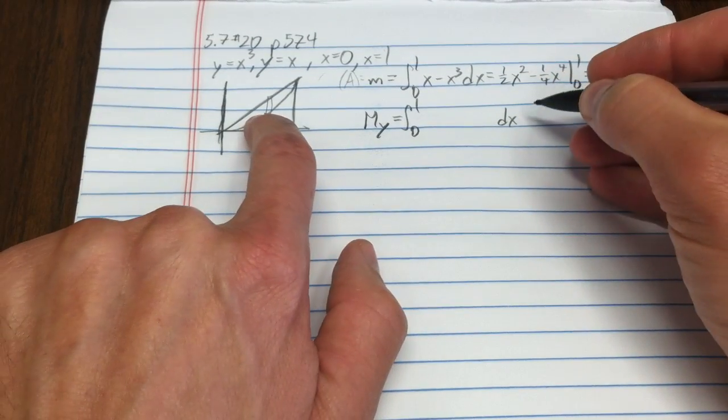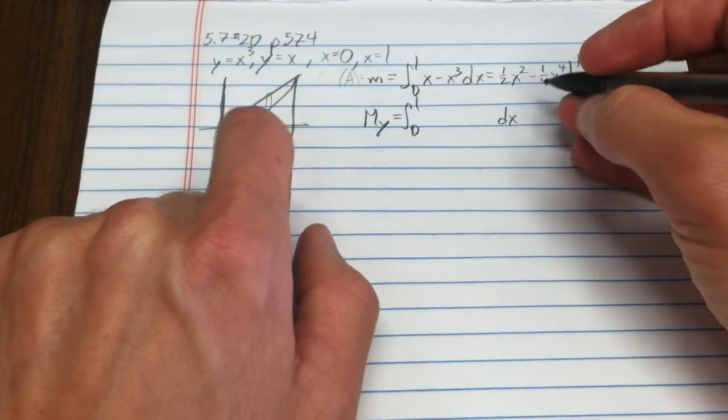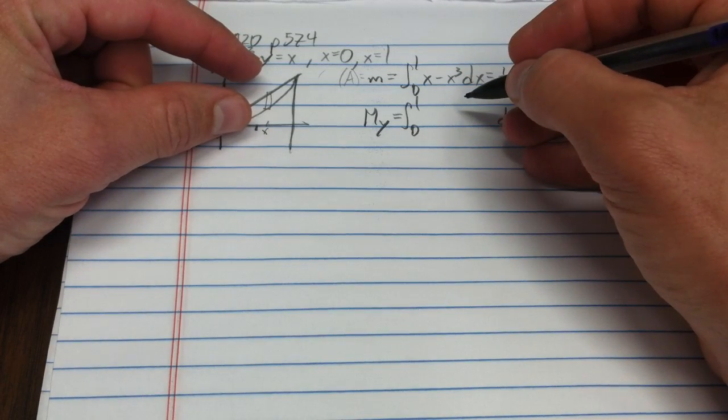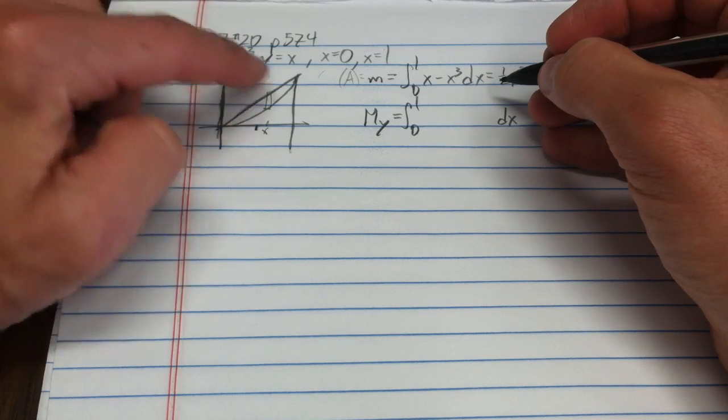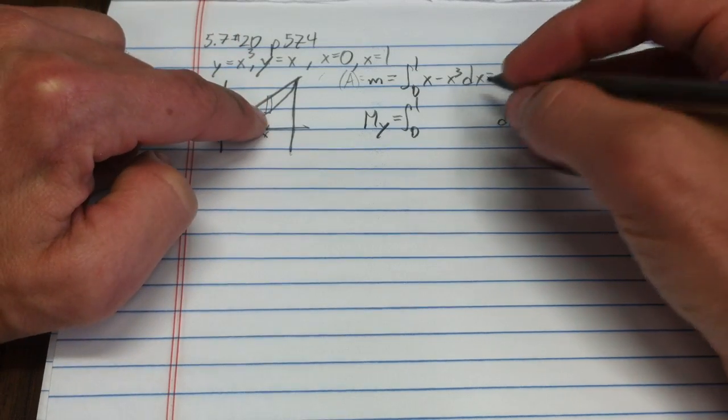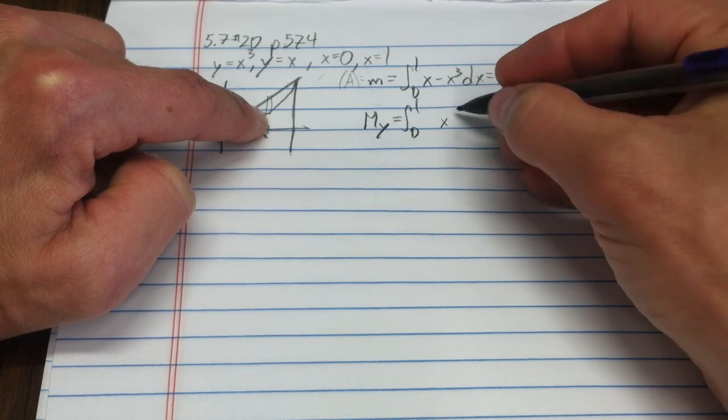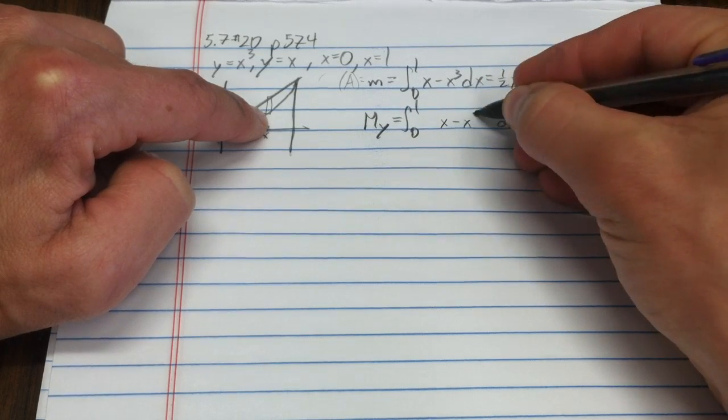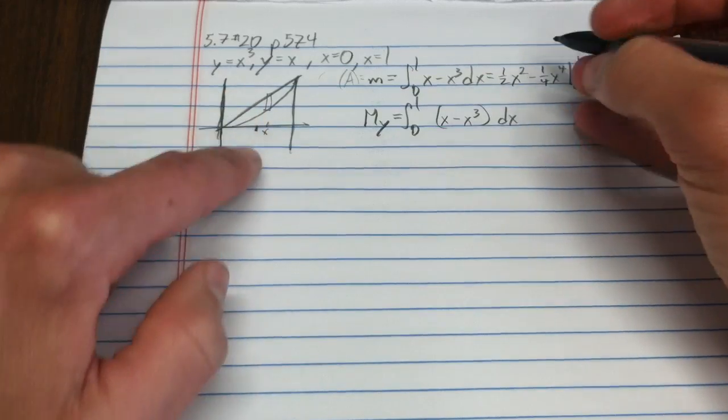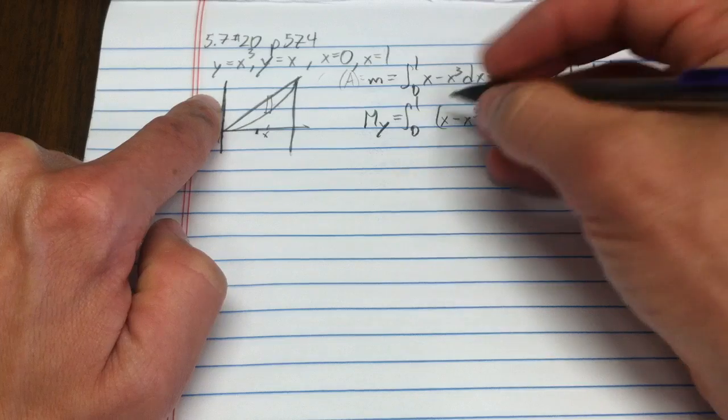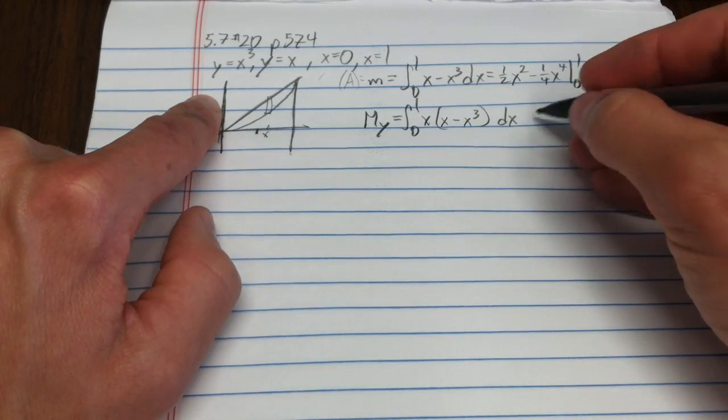The width of that rectangle is dx. The height of that rectangle is f of x minus g of x, so the top function minus the bottom function. That's x minus x cubed. But then I have to multiply that by how far it is away from that axis. It's x away from the axis. So that's the integral.